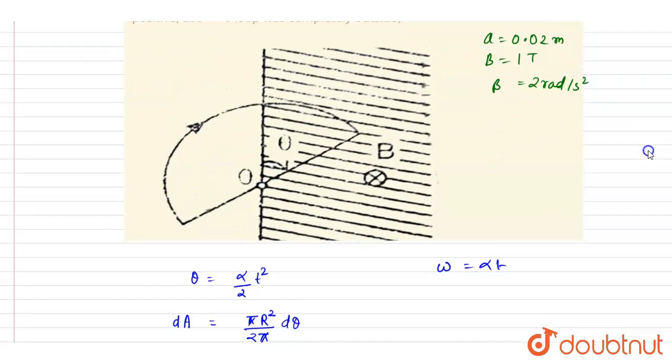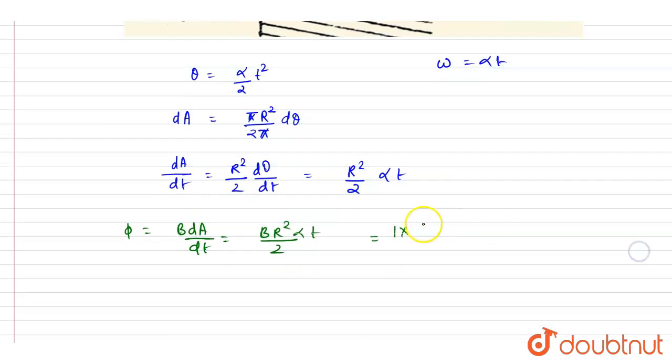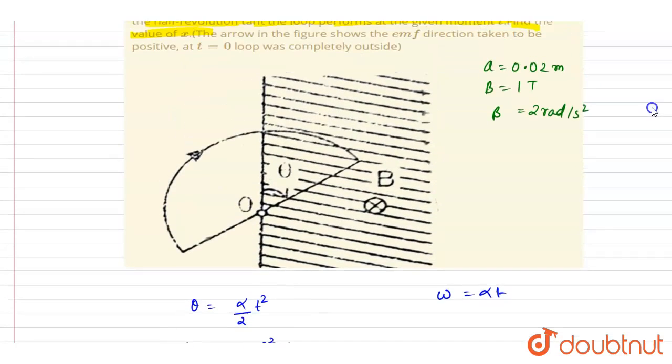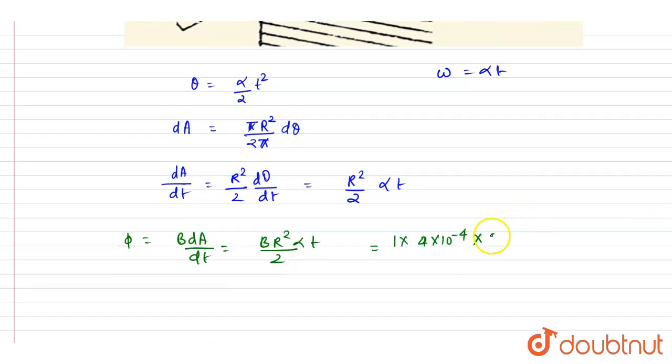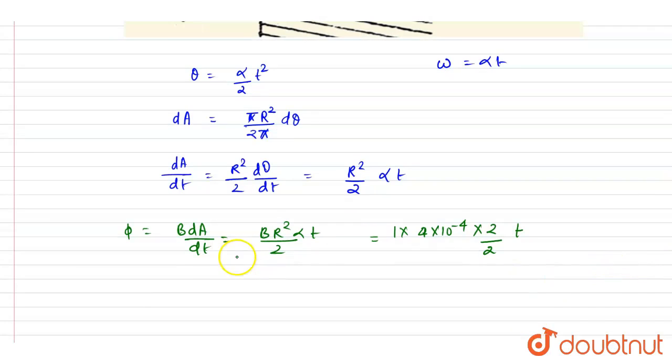The radius is 2 by 100, so 2 by 100 is 2 times 10 to the power minus 2. So it will be 4 times 10 to the power minus 4 and alpha is 2 times t. So this will be the flux.